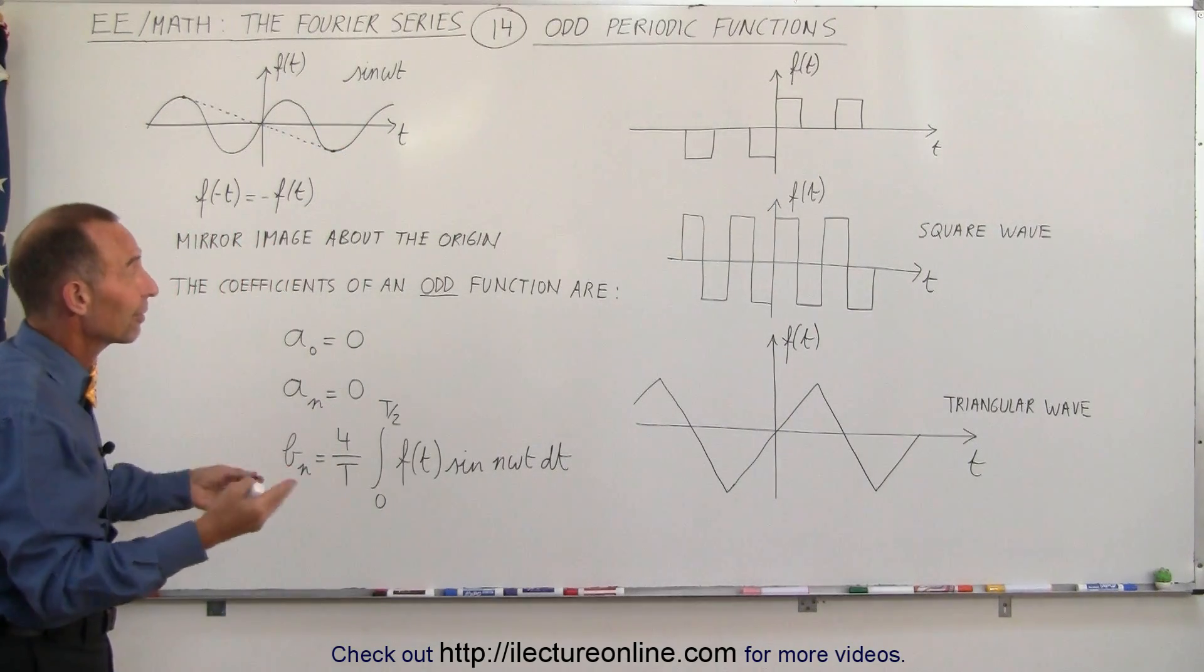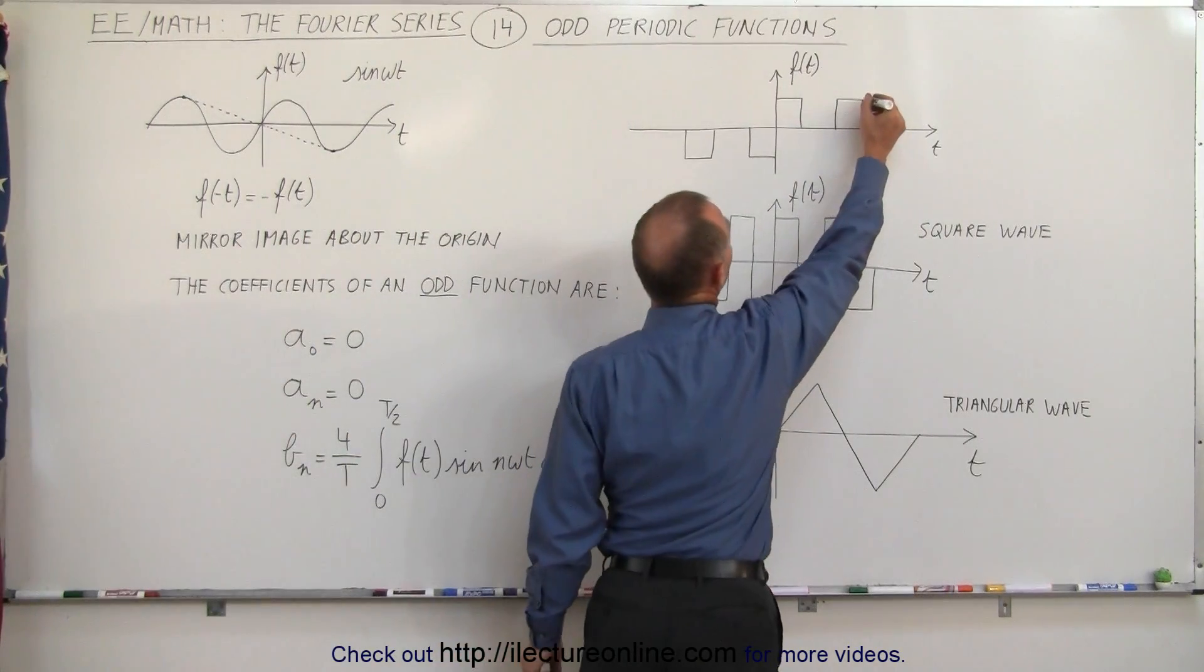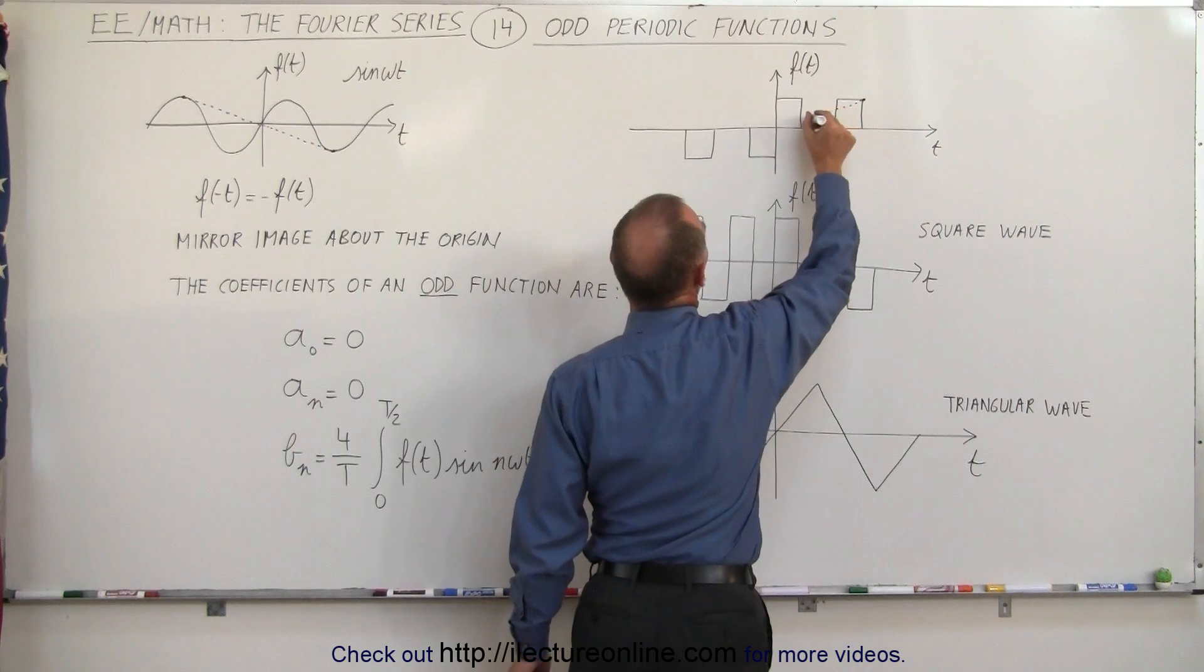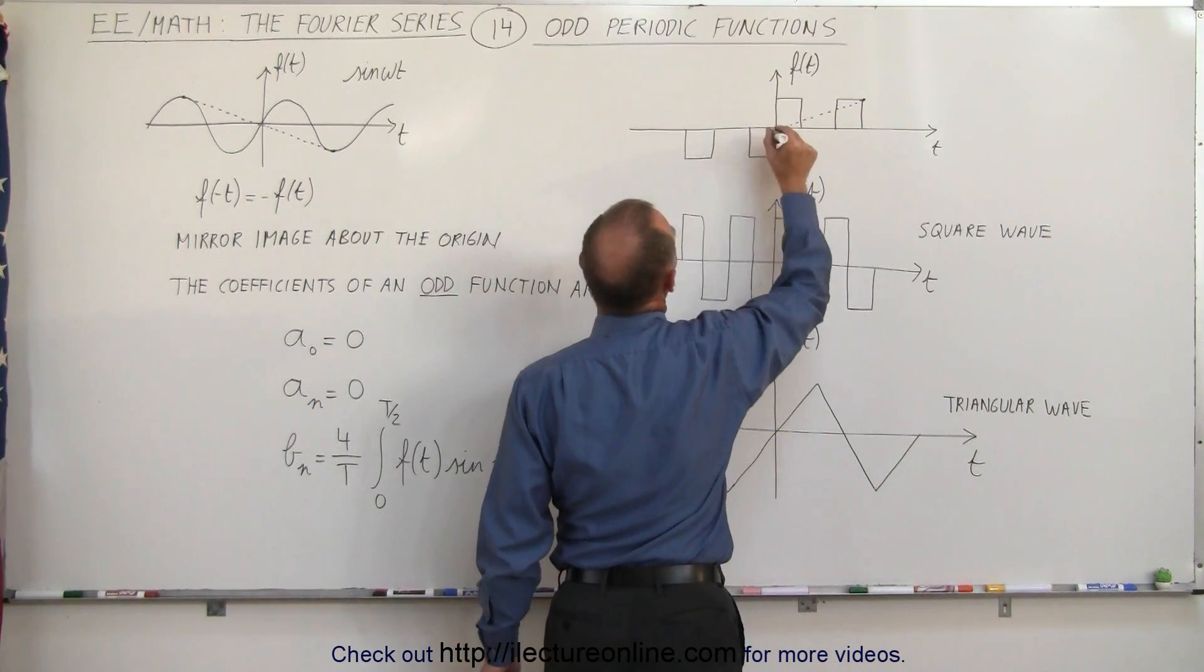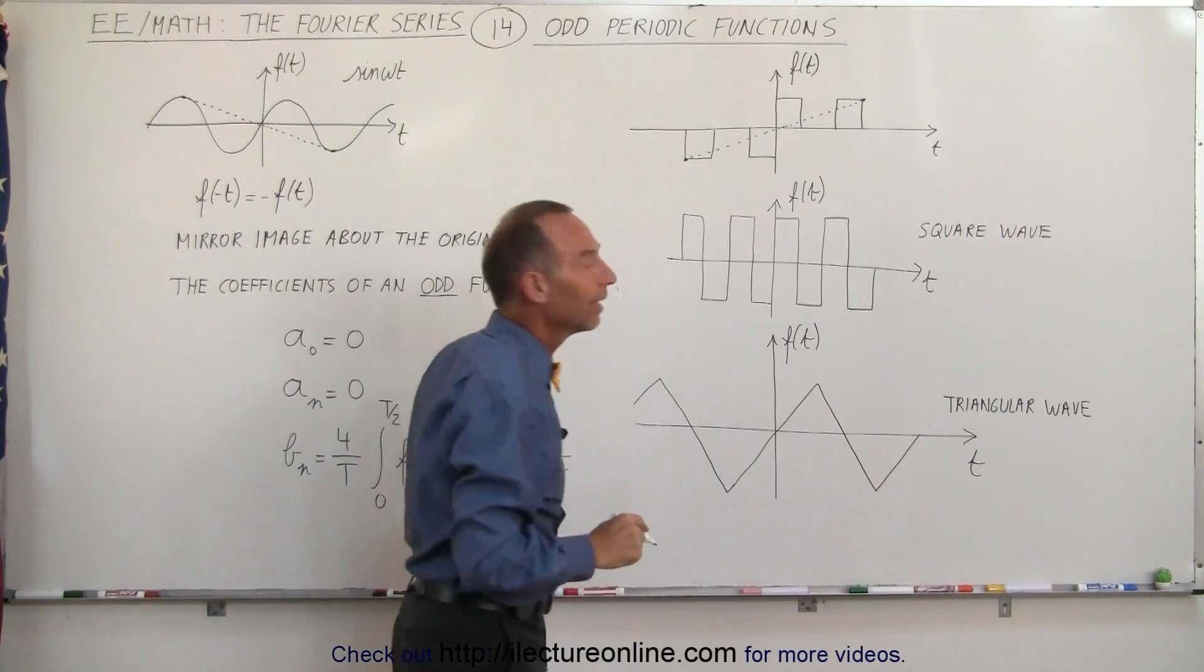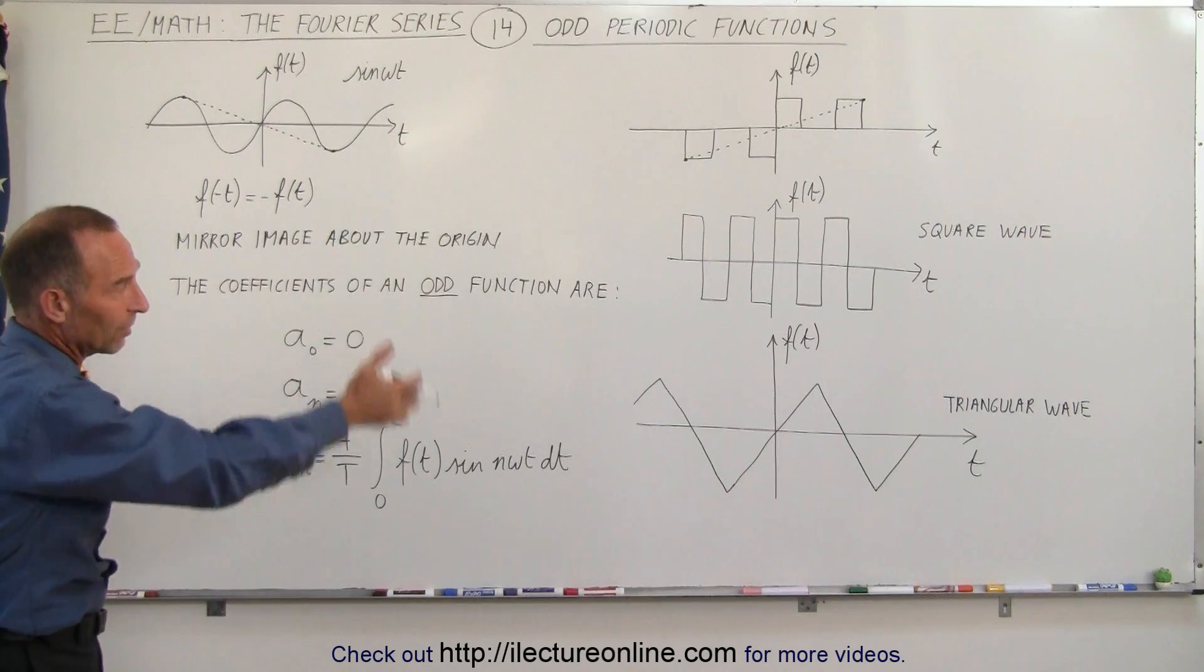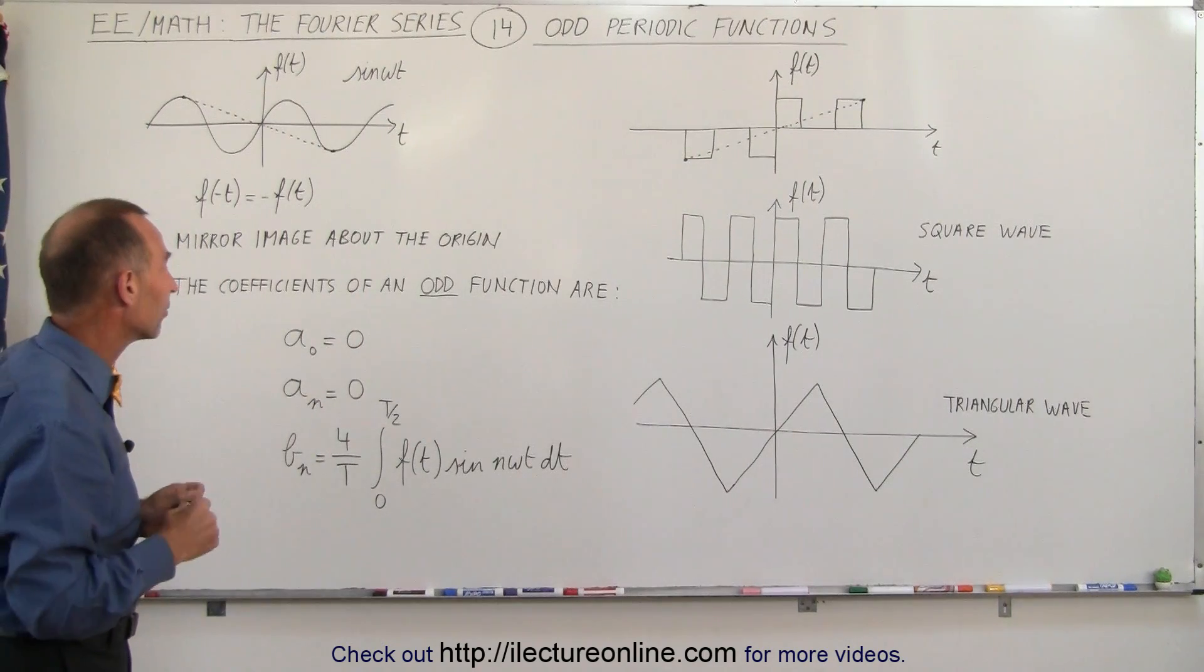Here's three very common periodic functions. Again we can pick a point like right here and draw a line from there to the origin, and notice if we continue in the same direction we'll eventually end up at the mirror image point on the other side. That's how you know you're dealing with an odd periodic function. You can try the same with the other two and you'll find that would be the case.